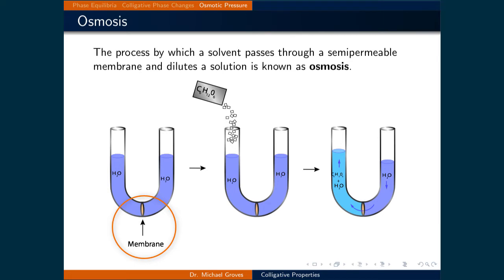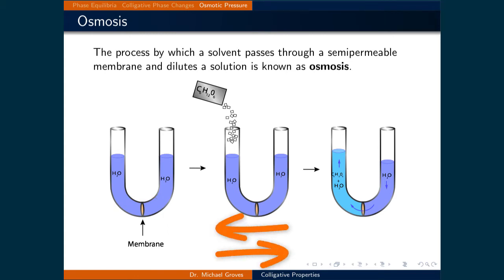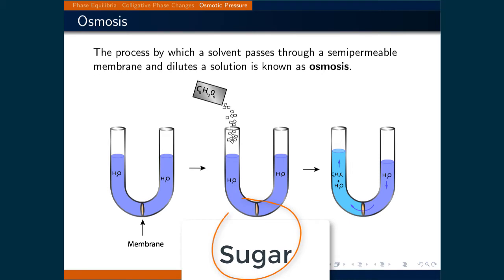By semi-permeable, what is meant is that only certain components can pass through. Typically, this is the solvent that can flow freely, so in this case water can pass through while the solute, being the sugar, cannot.